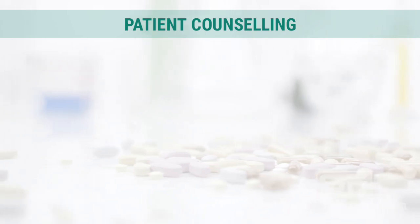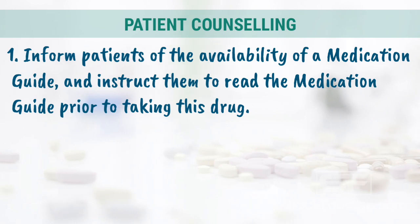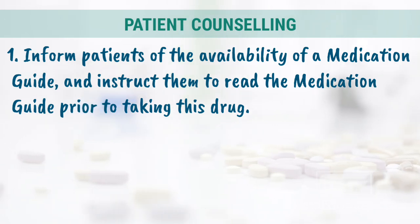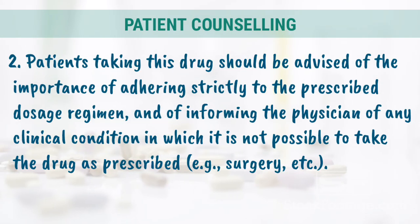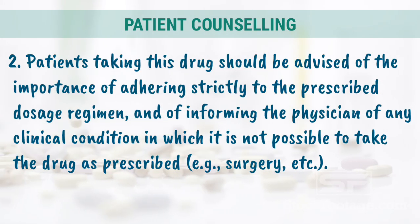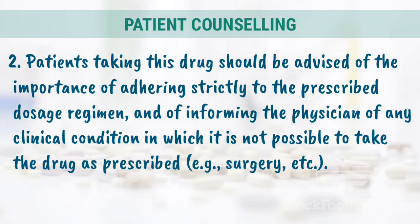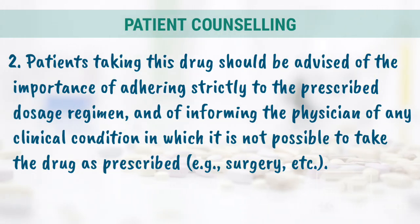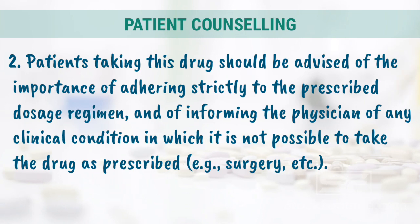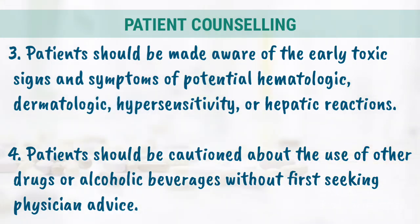Patient counseling: 1. Inform patients of the availability of a medication guide and instruct them to read it prior to taking this drug. 2. Patients should be advised of the importance of adhering strictly to the prescribed dosage regimen, and of informing the physician of any clinical condition in which it is not possible to take the drug as prescribed, for example, surgery. 3. Patients should be made aware of the early toxic signs and symptoms of potential hematologic reactions.